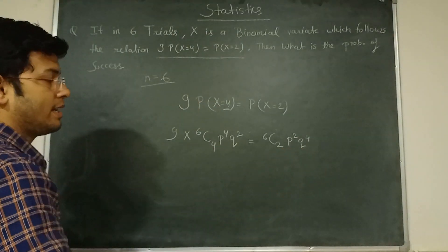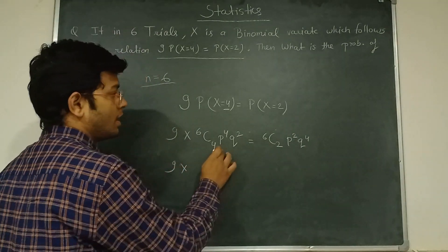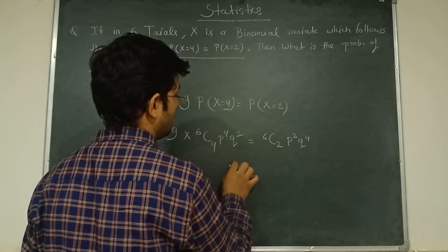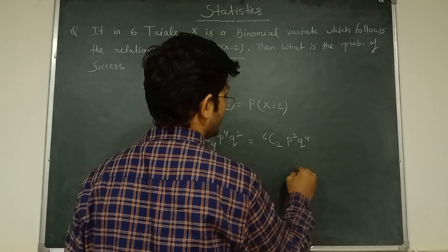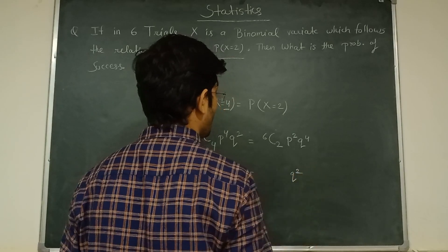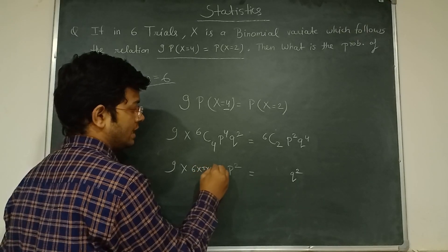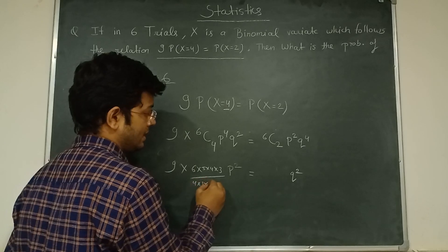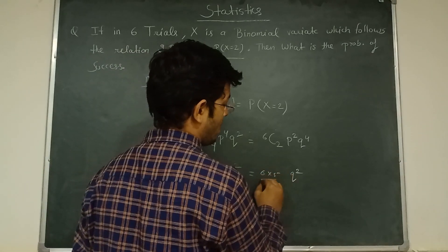If we cancel it out, we have remaining p square and q square. 6C4 means (6×5×4×3)/(4×3×2×1), and we rewrite as (6×5)/(1×2). Simply we cancel out 6, 5, 1, and 2.